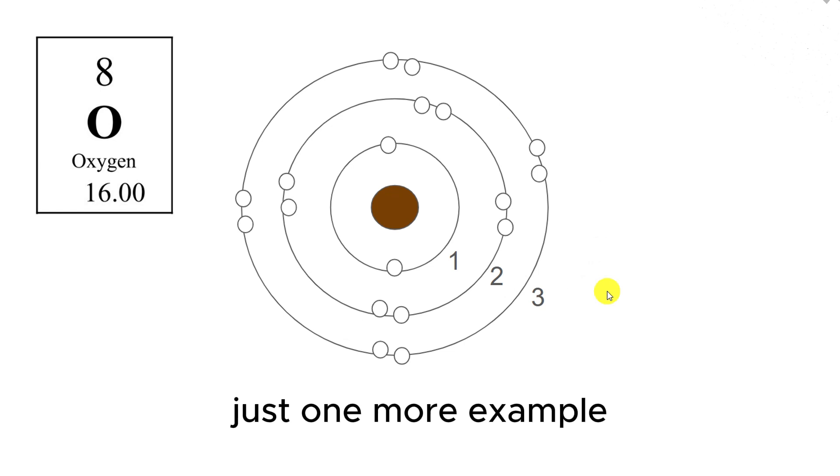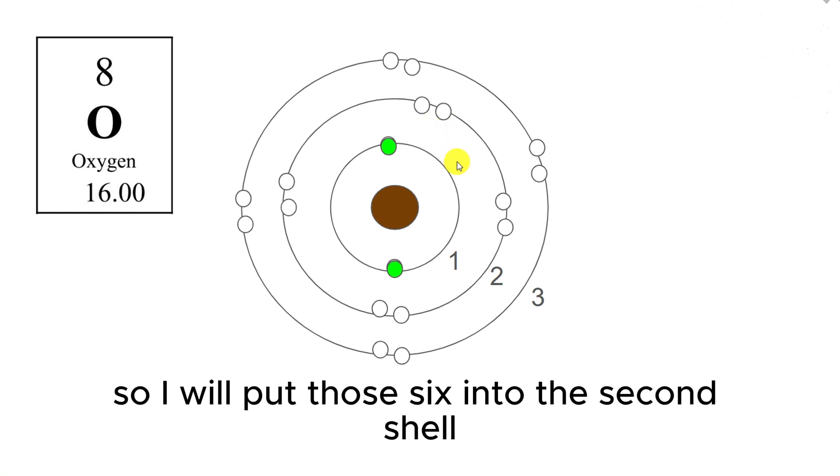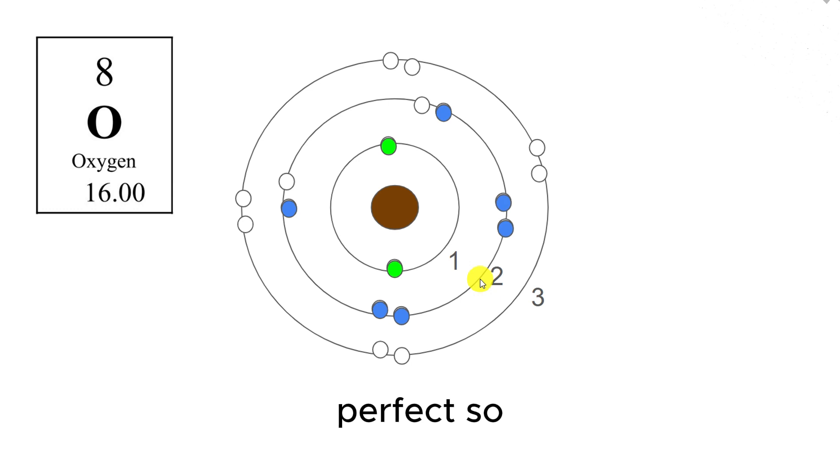Just one more example. Oxygen has eight electrons. Here is how they fill in the shells. First shell, two electrons. I have six left. Second shell, I can put eight maximum, but I have six. So I will put those six into the second shell. Perfect. So now we know how the electrons get filled into the shells.